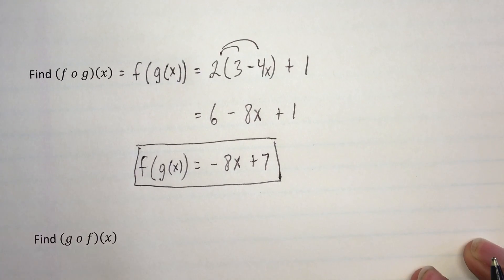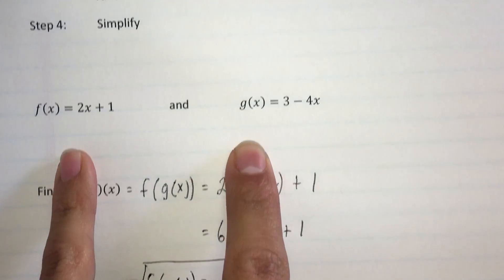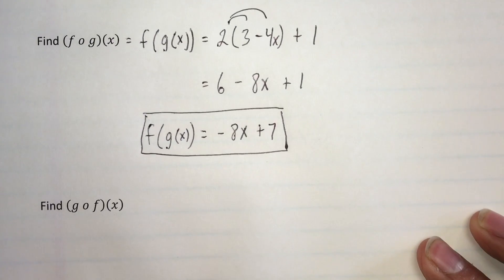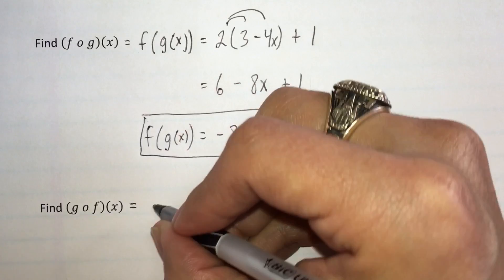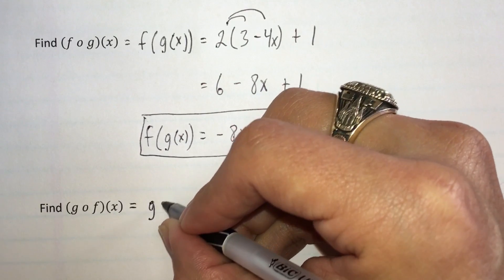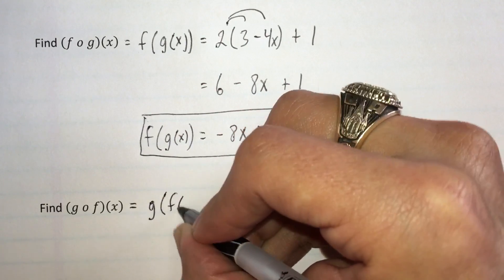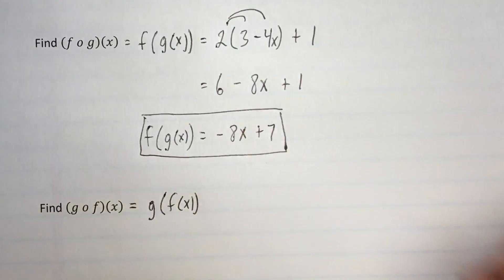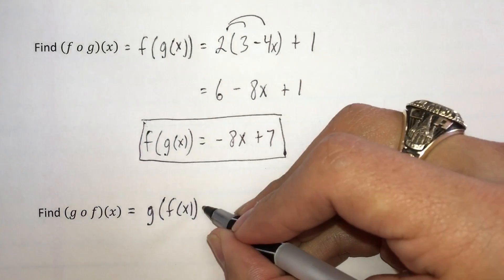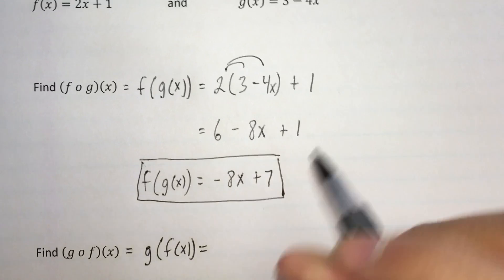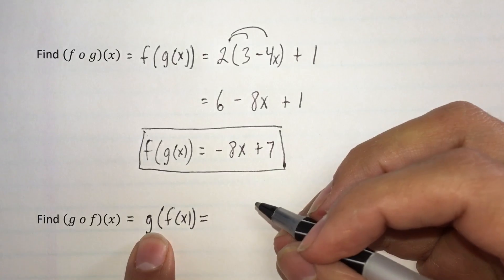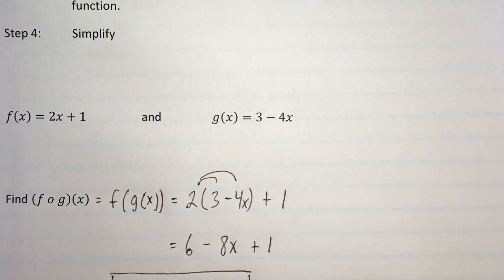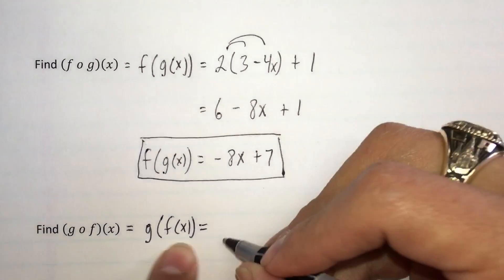Let's take a look at another example. Same two functions, but now we're going to find g of f of x. This notation would read g of f of x. We're going to write the outside function and replace x with parentheses. In this case our outside function is g, so I'm going to write 3 minus 4 and then put parentheses.